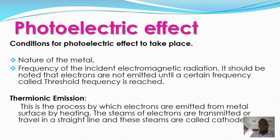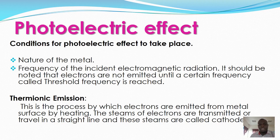We have some conditions for the photoelectric effect to take place. First is the nature of the material or metal — we normally use zinc sulfide as a photoelectric material because it can readily emit electrons. Another condition is the frequency of the incident electromagnetic radiation. It should be noted that electrons are not emitted until a certain frequency called the threshold frequency is reached.